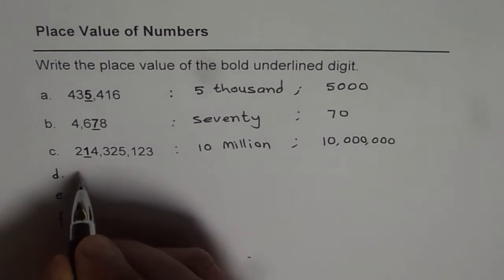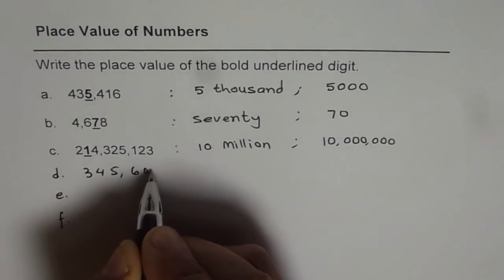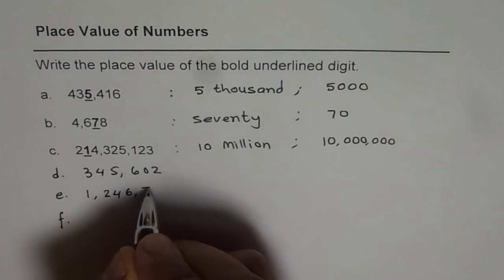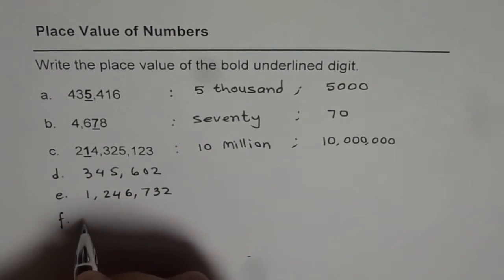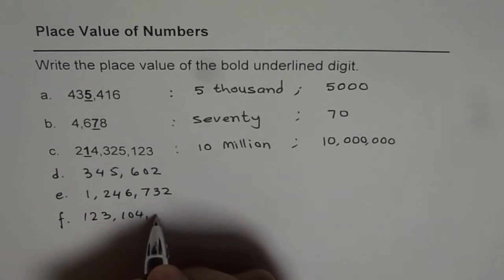So let me write down number 345,602. Then we have 1,246,732. And then let me write 123,104,006.